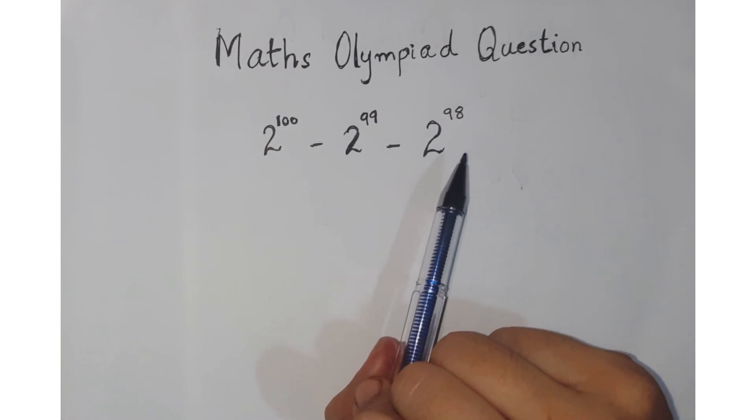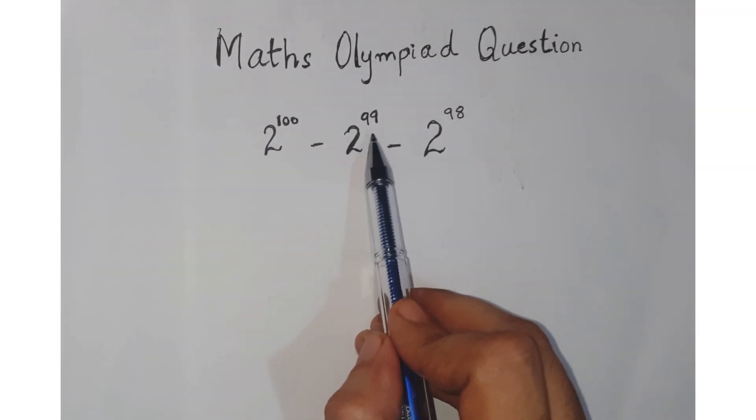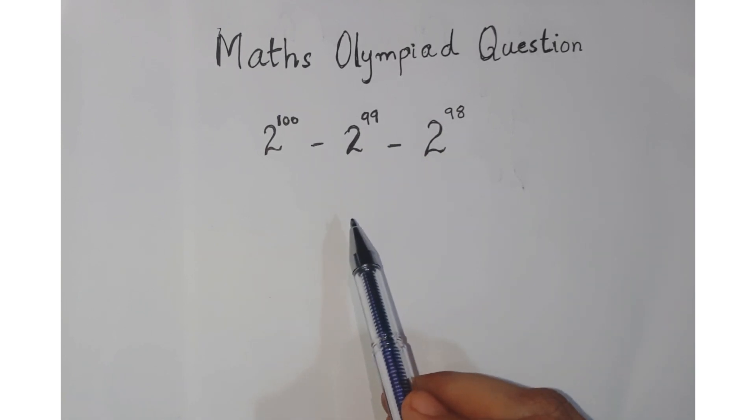Let's see what we are going to do with this question. The question is 2 raised to the power 100 minus 2 to the power 99 minus 2 raised to the power 98. We are going to split the powers in the form of 98 and the next number.